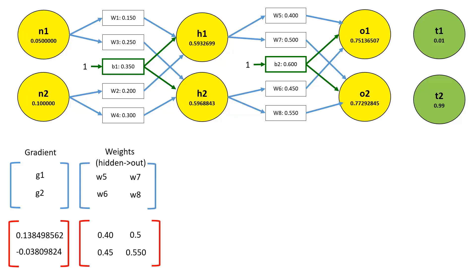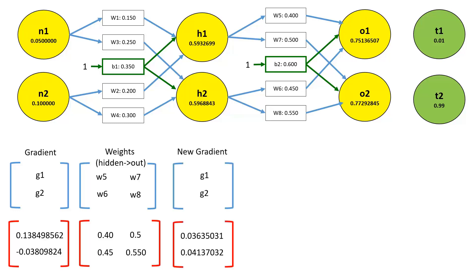We'll create a new matrix to represent the weights in the output layer. Previously, when we created a matrix to represent the output layer, it was ordered left to right, top down, so it would read W5, W6, W7, W8. However, that matrix was built to represent the weights as they relate to the output neurons. As we're considering these weights now from the perspective of the hidden layer neurons, we have to order them accordingly. For example, H1 is connected to W5 and W7, so the first row of our matrix reads W5, W7. And accordingly, the second row reads W6, W8, as those are the weights that connect H2 to the output neurons. We now get a new gradient simply by multiplying this matrix — which represents the weights between the hidden layer and the output layer — by the gradient for the output layer. This multiplication provides us with a new vector representing the new gradient values for our hidden layer.